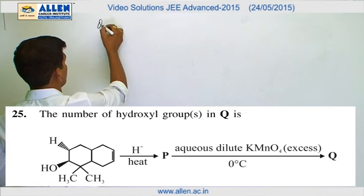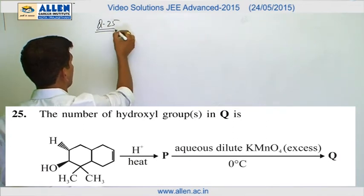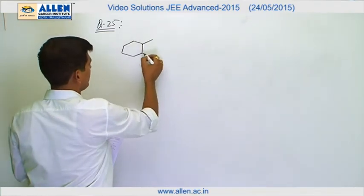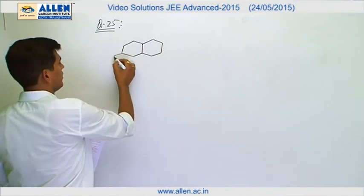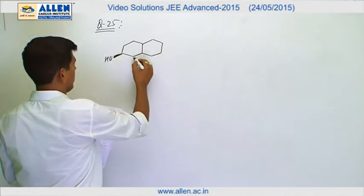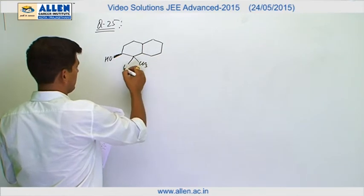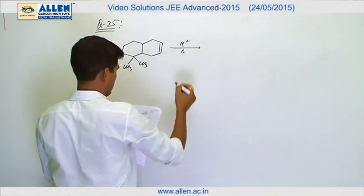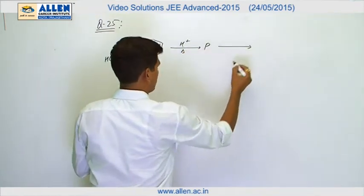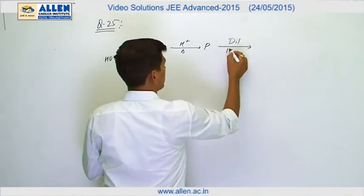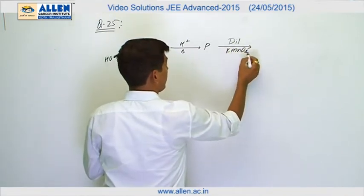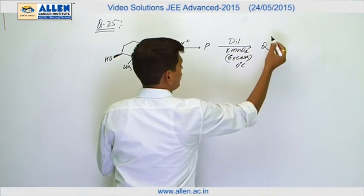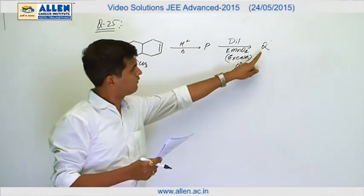Question number 25. Here we have a sequence of organic reactions starting with an optically active alcohol, given with two CS3 groups and one double bond. With H+ and heat, we obtain product P. Then we use dilute KMnO4 (Baeyer's reagent) in excess at 0 degrees centigrade, and the product is Q. We have to find the number of OH groups in Q.